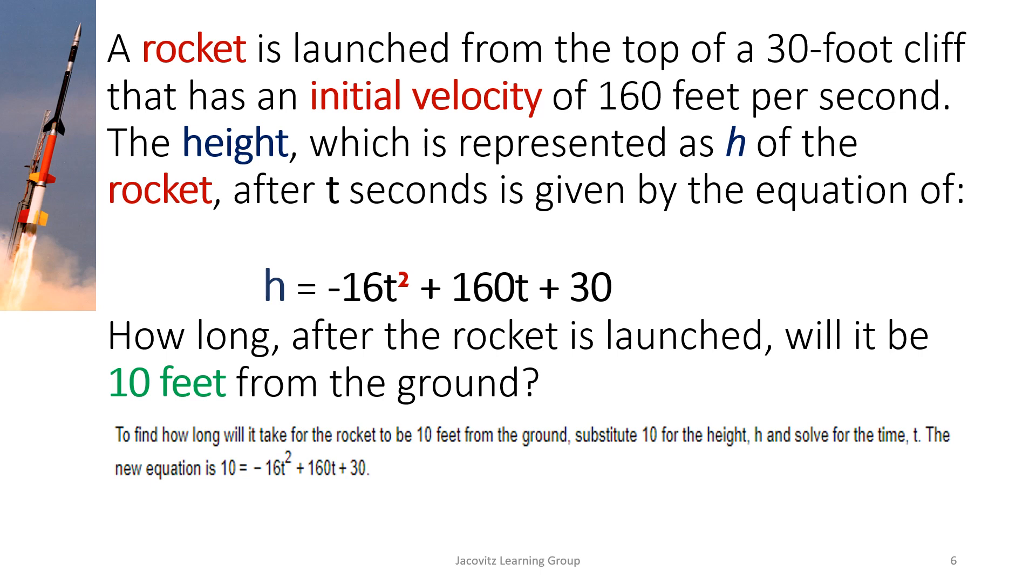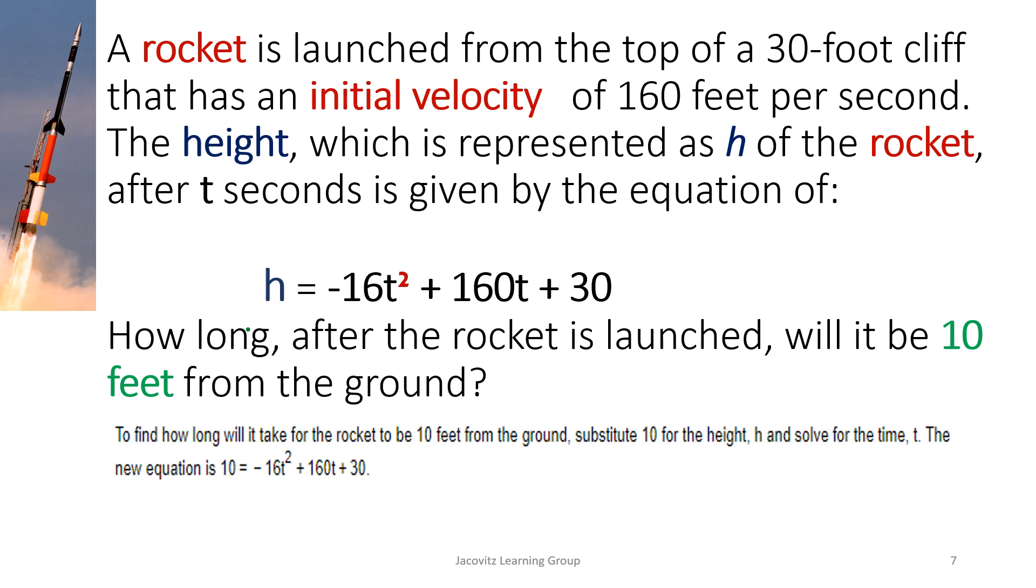A rocket is launched from top of a 30-foot cliff that has an initial velocity of 160 feet per second. The height which is represented as h of the rocket up to two seconds is given by the equation: h equals negative 16t squared plus 160t plus 30. How long will it be 10 feet from the ground? You have to substitute. You then have to take this h and put a 10 here, because you are actually now solving for how long before it's 10 feet.